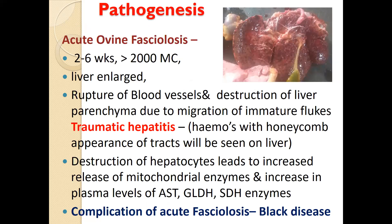Pathogenesis mainly depends on the number of metacercaria ingested by the definitive host and results in three forms: acute form, subacute fasciolosis, and chronic form. Acute fasciolosis mainly occurs in sheep when it ingests more than 2,000 metacercaria, lasting two to six weeks. There is enlargement of the liver, rupture of blood vessels, and destruction of liver parenchyma due to migration of immature flukes, resulting in traumatic hepatitis. Hemorrhages with honeycomb-like appearance are seen. There is destruction of hepatocytes leading to increased release of mitochondrial enzymes like aspartate aminotransferase, glutathione dehydrogenase, and succinate dehydrogenase. The main complication of acute fasciolosis is black disease.